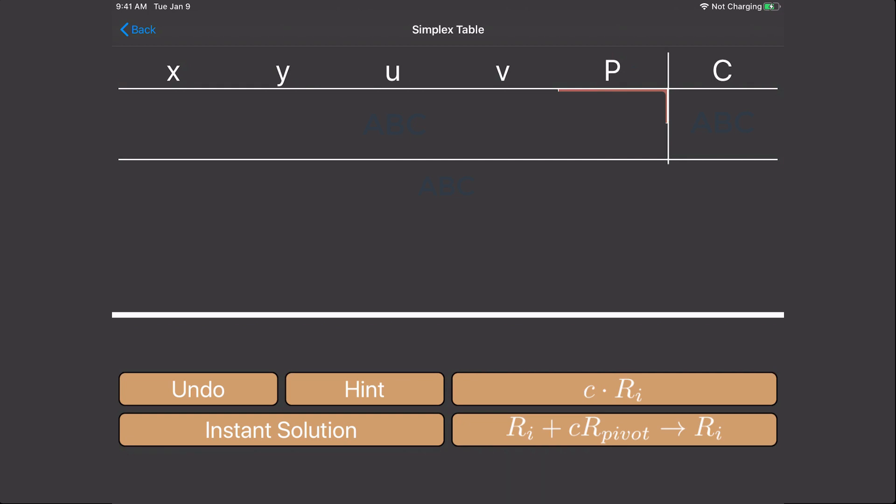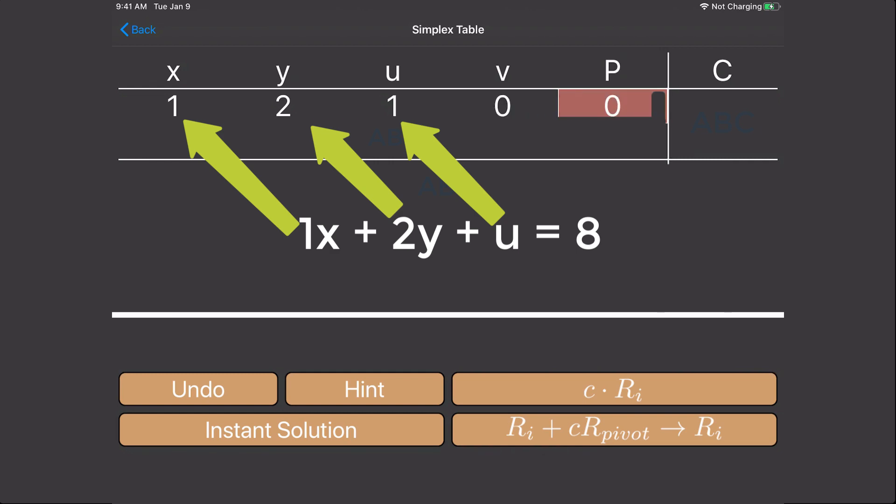The middle section is all the coefficients from the inequalities in slack variables. The first was x plus 2y plus u equals 8. So the coefficients are 1, 2, 1, 0, 0, 8. Make sure you place zeros for the variables that are not in the problem.